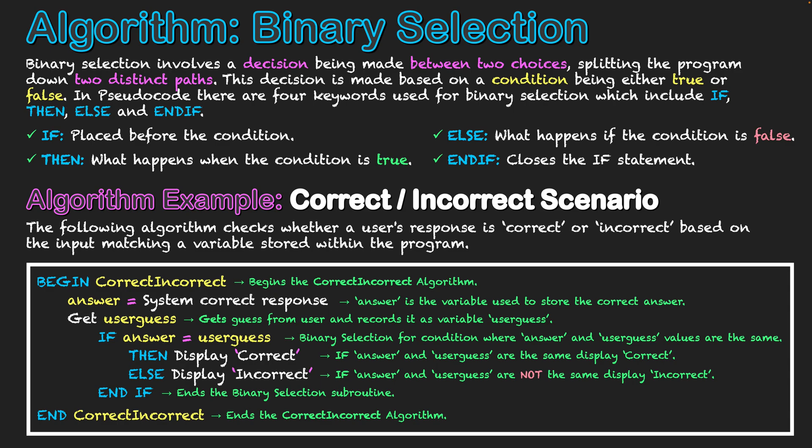So obviously you can see the binary selection in there: between if and endif we have our condition of answer equaling user guess. We have the then statement reflecting what happens if they are the same—it will display correct. And the else statement for them not being the same in relation to our condition. And that incorrect will be displayed if obviously the values aren't matching there, and endif ending off the statement.